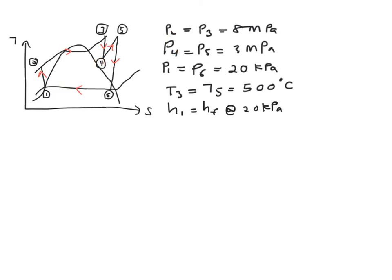Next, moving to your state 4, you only have the information of your pressure. But because this is an ideal reheat Rankine cycle, you know that you are going to have the relation of your isentropic, which is your S3 must be equal to your S4.